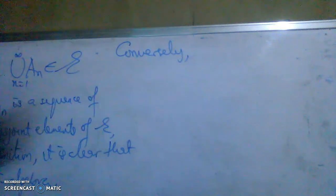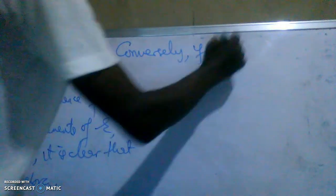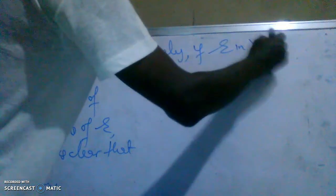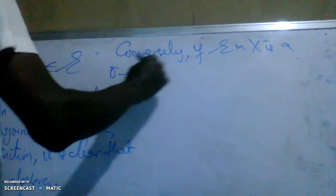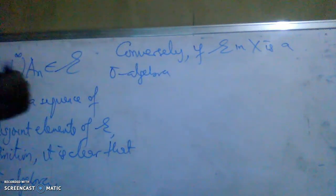We have proved that if the union of that sequence is in the algebra, then definitely that algebra is a sigma-algebra. Conversely, it is the other side of the proof. Conversely, if the algebra E in X is a sigma-algebra, then...